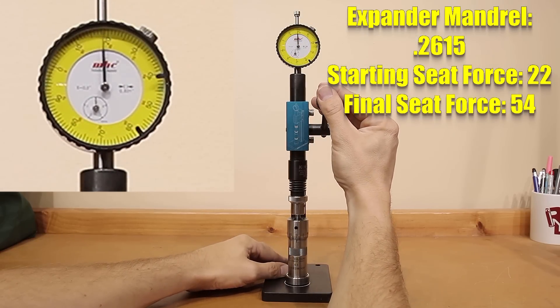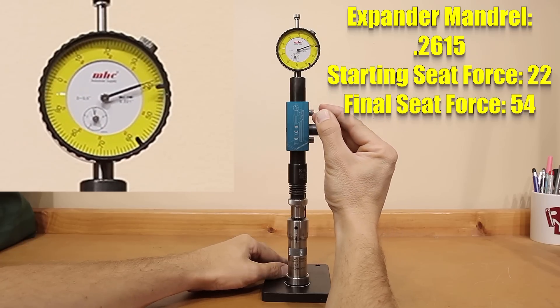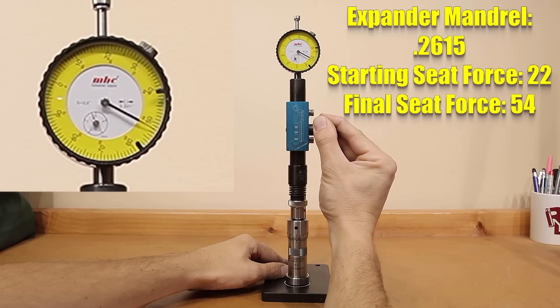Moving on to the 0.2615 expander mandrel, the starting force dropped slightly to 22 pounds, and our final seating force seemed to drop all the way to 54 pounds.